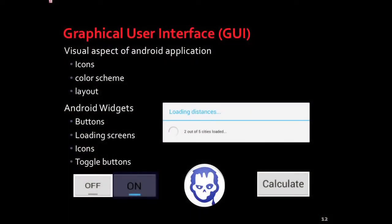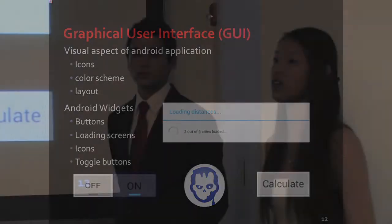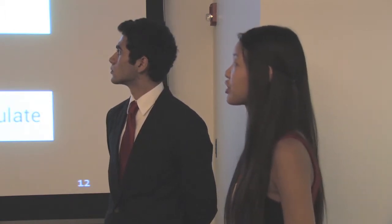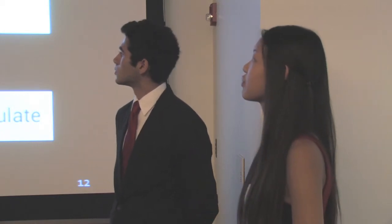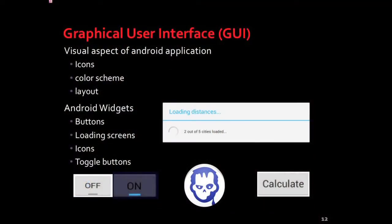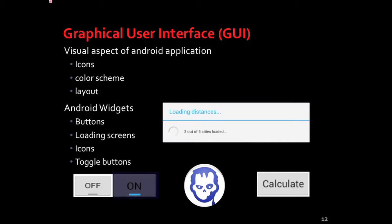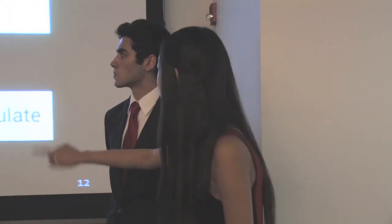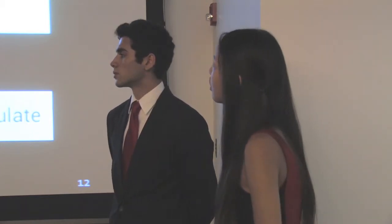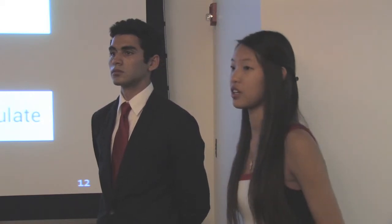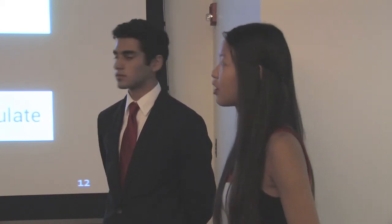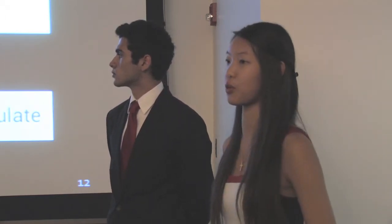When developing Android applications, the graphical user interface is a main component. It's the visual aspect and includes icons, color schemes, layouts, and backgrounds. Google has its own preset GUI design kit, which includes color schemes, widgets, buttons, and loading screens — many of which we incorporated into our application, such as a loading screen, toggle button, app icon, and buttons. Google creates these pre-design kits so any Android developer can access them, creating consistency between all Android apps, which gives applications intuition for the user and therefore more marketability.